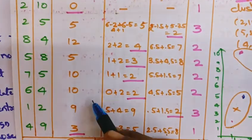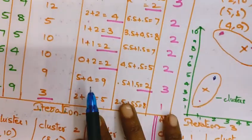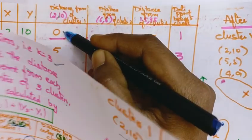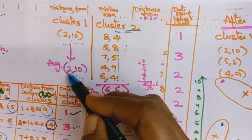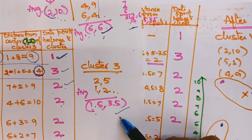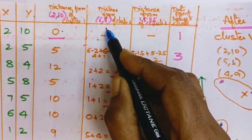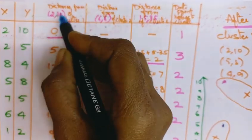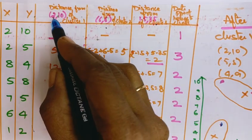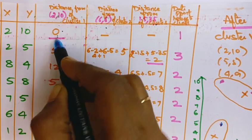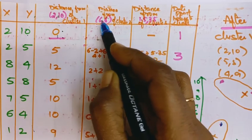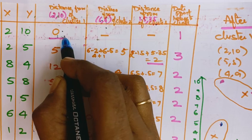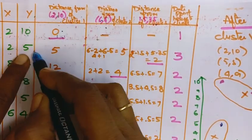For iteration 2, we use the new centroids: cluster 1 = (2, 10), cluster 2 = (6, 6), cluster 3 = (1.5, 3.5). Again calculate distances from each data point to these new centroids using the same formula: |x2-x1| + |y2-y1|. For example, (2, 10) to (2, 10): |2-2| + |10-10| = 0. Since 0 is the minimum, we stop calculating further for that point.